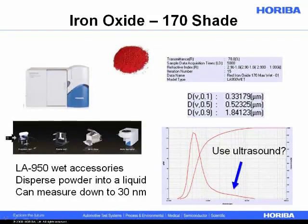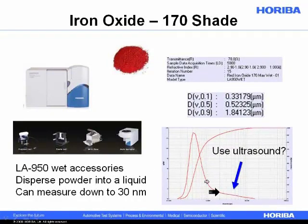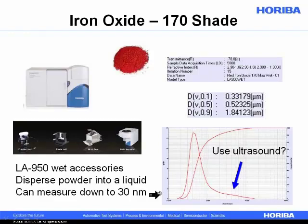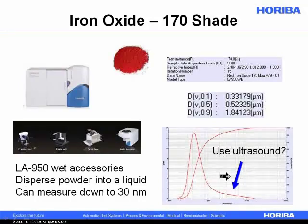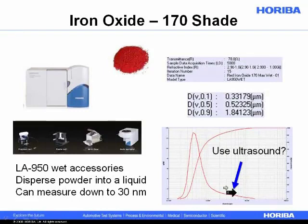One of the other reasons we might use a wet dispersion for this powder is that looking at the results, we see larger particles and then the main peak, possibly indicating agglomeration. We might want to use ultrasound to break up these agglomerates. However, although often the goal is to measure the particle in its primary state, we decided not to use ultrasound here because what we're really interested in is the natural state of the powder as we use it — since the absorption characteristics of color are dependent on size range, and as you apply it, you're not going to use ultrasound.